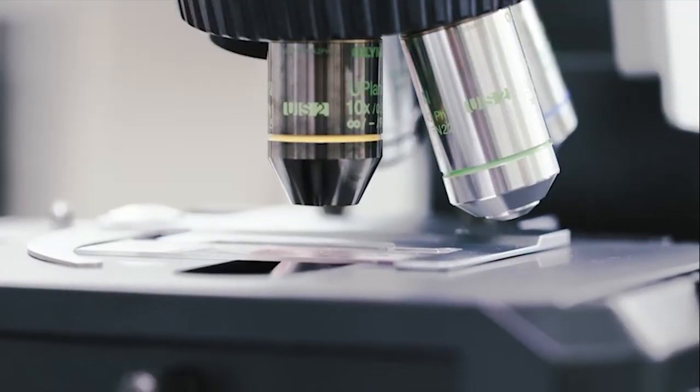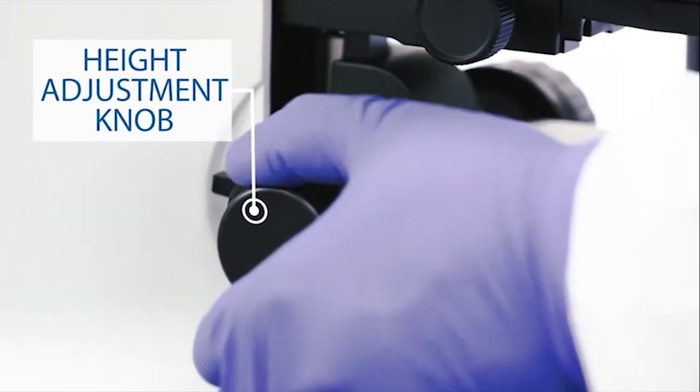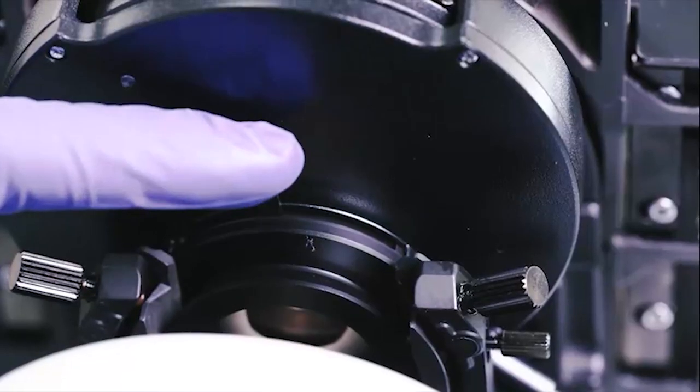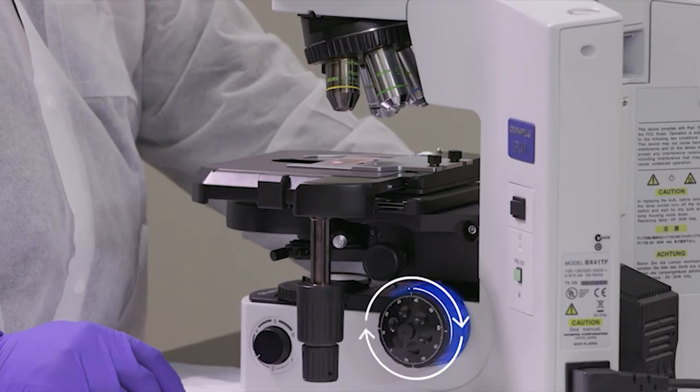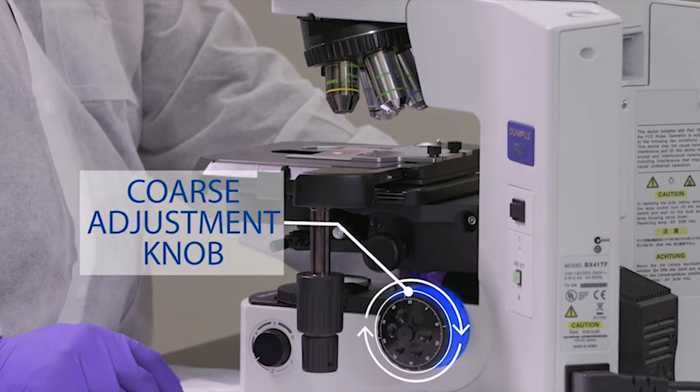Move the stage as high as possible with the height adjustment knob. Close the field diaphragm halfway and focus on the specimen at 10x using the coarse adjustment knob.